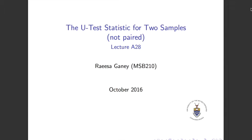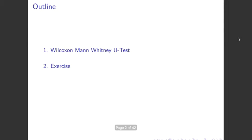Hello everyone. We are going to look at Lecture 828, which covers the U-test statistic for two samples that are not paired. We are still with the non-parametric tests and this is the third one we will look at. This is a very short lecture covering mainly the Mann-Whitney U-test, also known as the Wilcoxon test, with a short exercise you can do by yourselves.